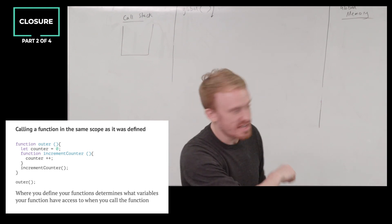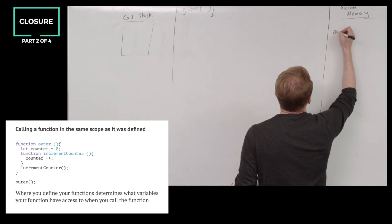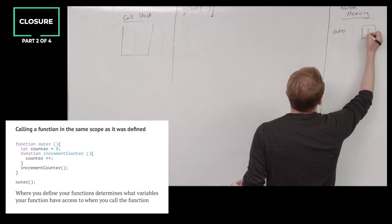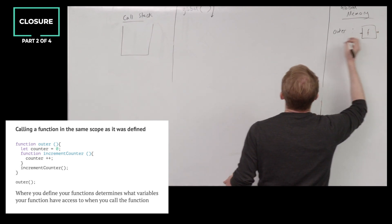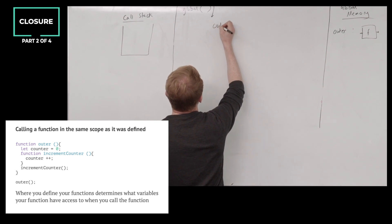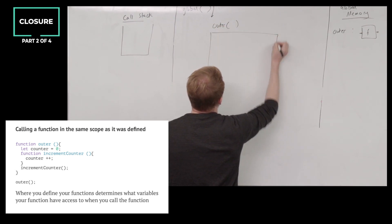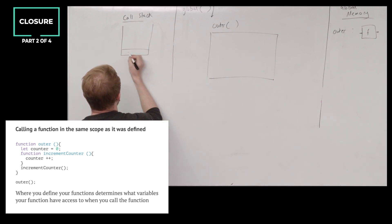Line one — Skylar, what's happening? We start by declaring a function outer with no parameters, stored in the global memory. Next, we're going to call outer with no arguments, and that opens up a new execution context, which we're going to add to the call stack.